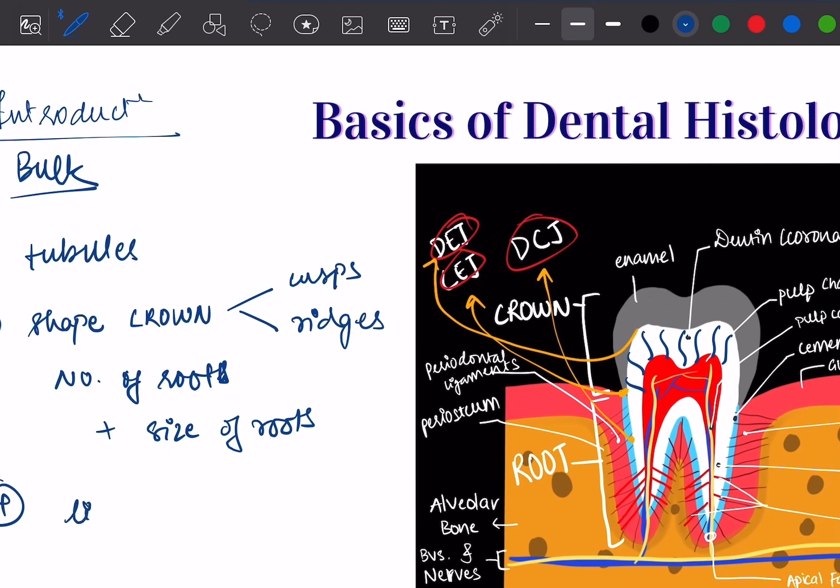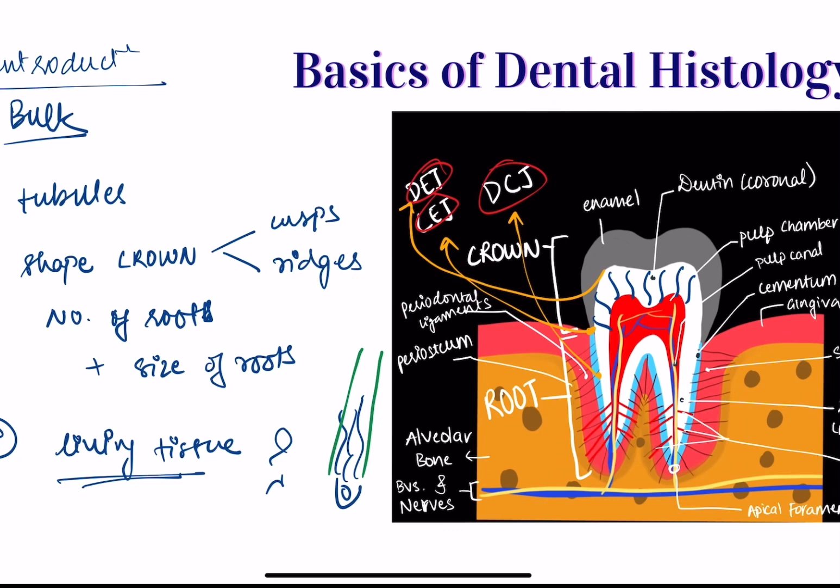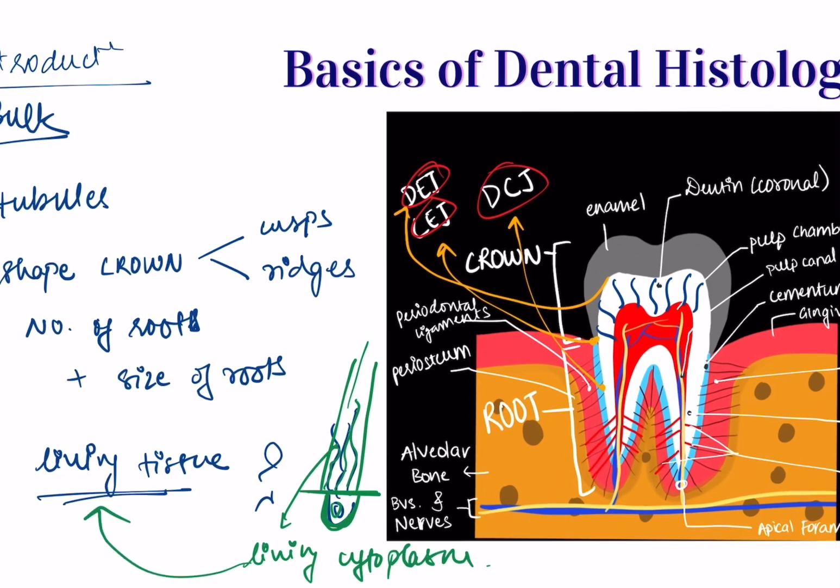It is a living tissue. Why is it living? Because it contains the process of odontoblast inside the tubules. This is the tubule. So the odontoblast lies outside the tubule but the process it extends goes inside the tubule. And this process contains the living cytoplasm. Hence this is a living tissue.